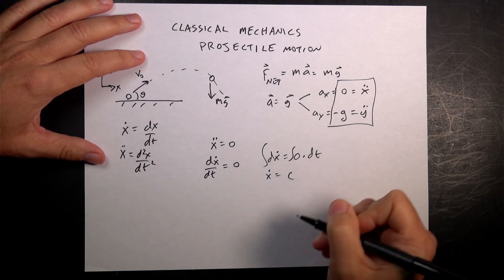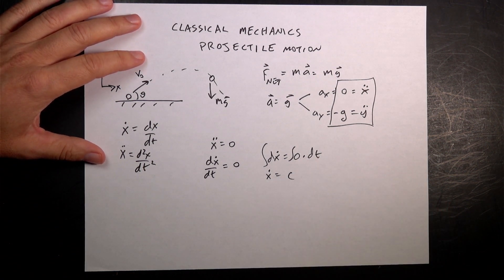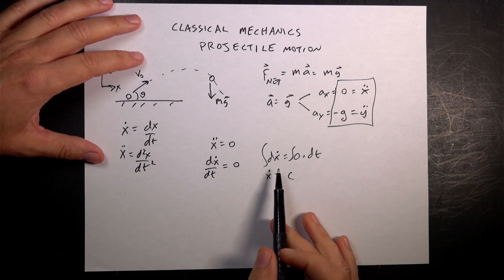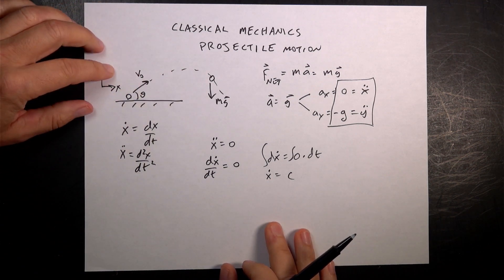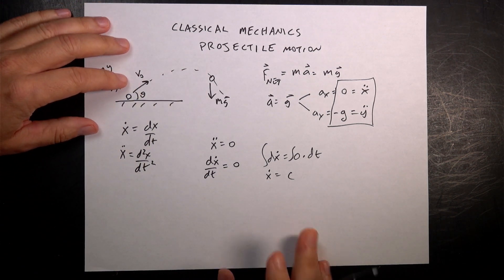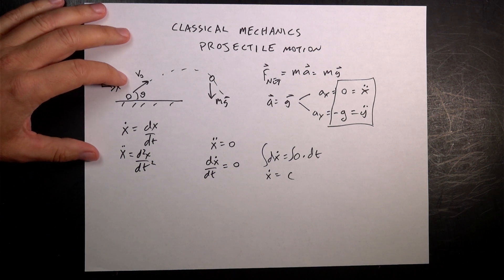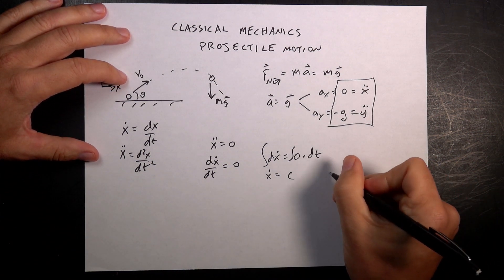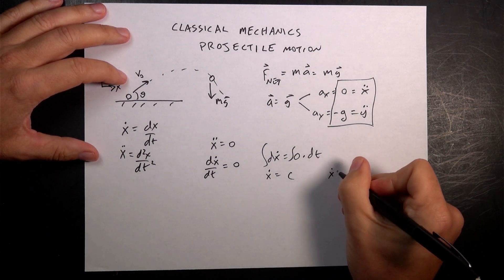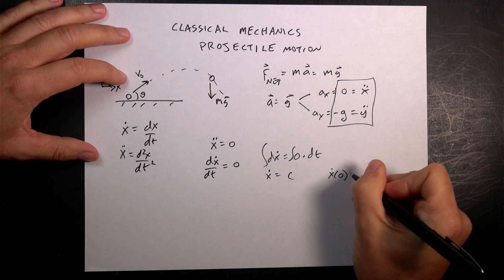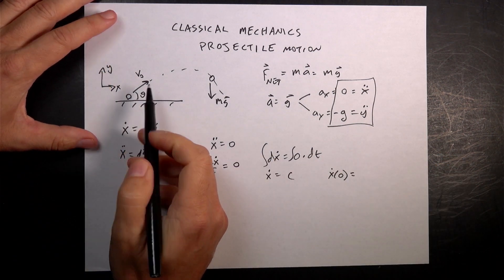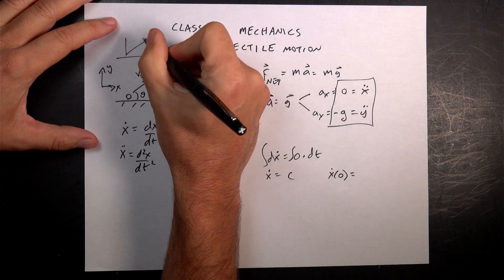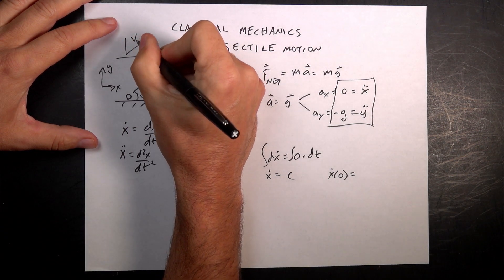So x dot equals a constant, which says that the x velocity as the ball goes through the air is constant — which we knew. But we can do even more with this. I can say x dot at time t equals zero, and looking at my diagram, I actually know what that is, because here's my velocity v zero and there's my angle, and this is my x component.